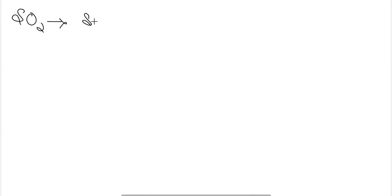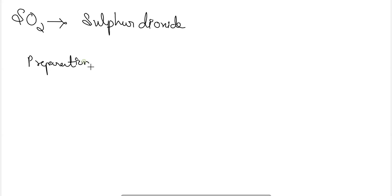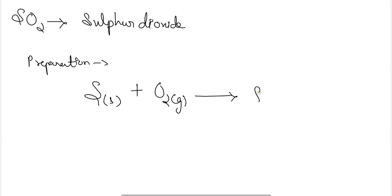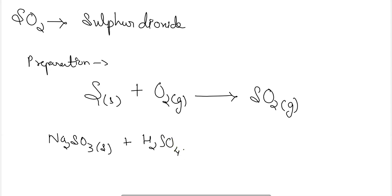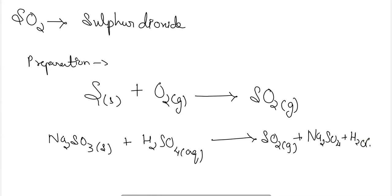Now let's discuss the compounds of sulfur. The first compound is sulfur dioxide (SO2). In the laboratory, sulfur dioxide is prepared from sodium sulfite plus dilute sulfuric acid, which gives sulfur dioxide gas, sodium sulfate, and water.